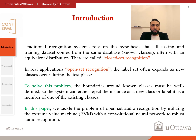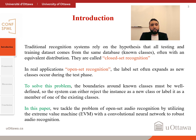Traditional recognition systems rely on the hypothesis that all testing and training data comes from the same database with the same distribution of classes. That is why they are called closed-set recognition. In real applications, however, labels or classes may extend and new classes may occur during the testing phase. To solve this problem, the boundary of known classes must be well defined, so the system can either reject new class instances or label existing classes corresponding to their class.